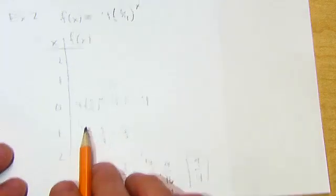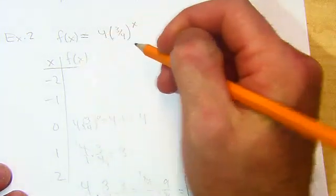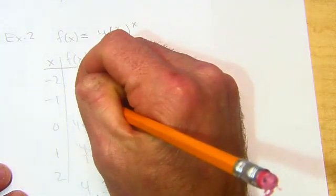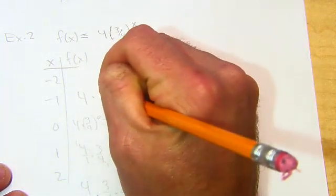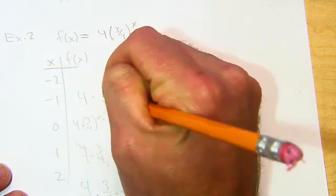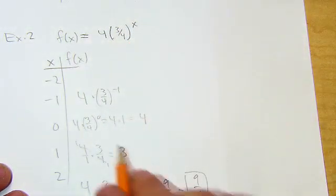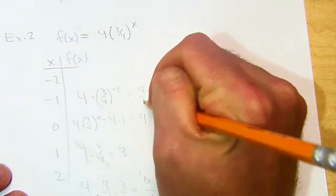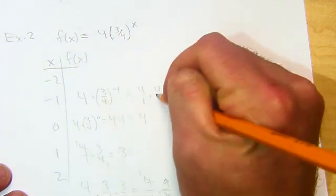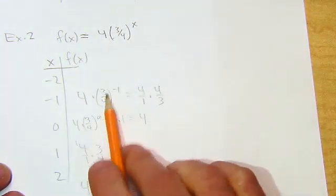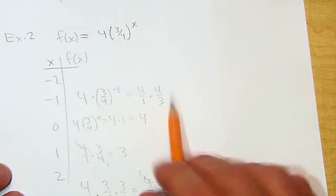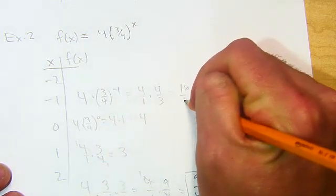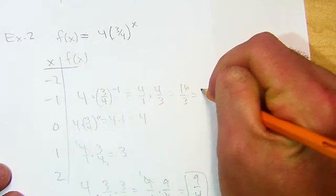That's the positives. So going down here in the negatives, you can do the same thing. 4 times 3 fourths to the negative 1. Remember, negative power means you flip her over. So it's 4 over 1 times 4 thirds. Flip that over to the 1 power. So really, we're talking 16 thirds. That's 5 and 1 third.